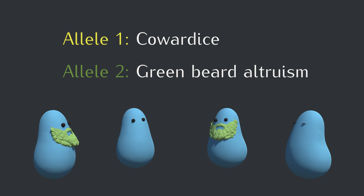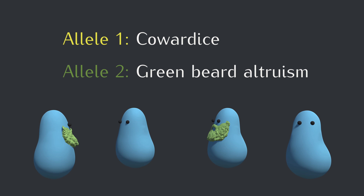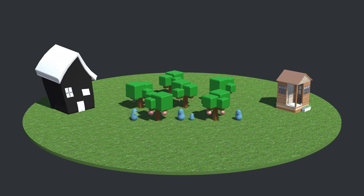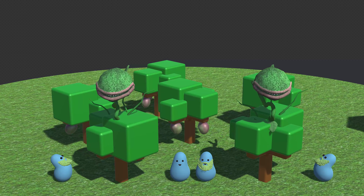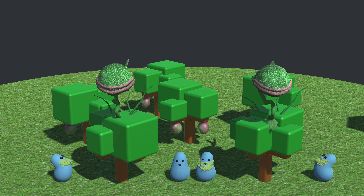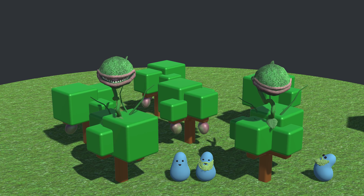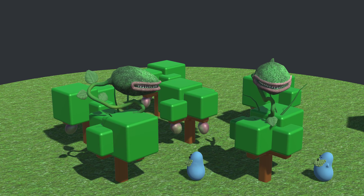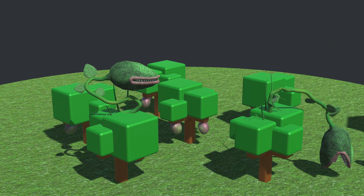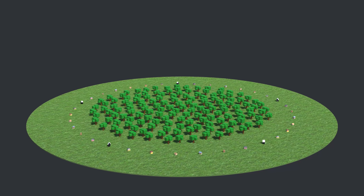Instead of the allele for altruism from before, we now have an allele for green beard altruism. When a blob with a green beard notices a predator, it'll only warn the other blob if that blob also has a green beard. Let's see whether this green beard strategy works in a simulation, going back to the 50% chance of getting eaten after giving a warning.